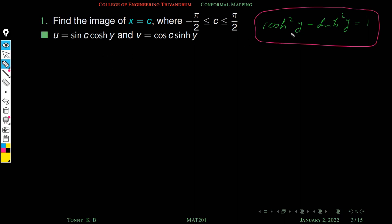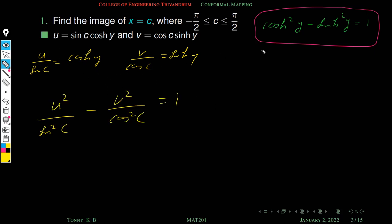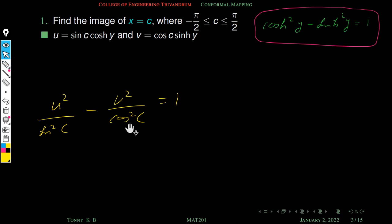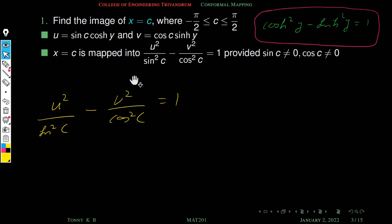Using the standard relation cosh²(y) − sinh²(y) = 1, we note that u/sin(c) equals cosh(y) and v/cos(c) equals sinh(y). Substituting gives u²/sin²(c) − v²/cos²(c) equal to 1. Geometrically this is the equation of a hyperbola, so x equal to c is mapped into this hyperbola, provided sin(c) ≠ 0 and cos(c) ≠ 0.